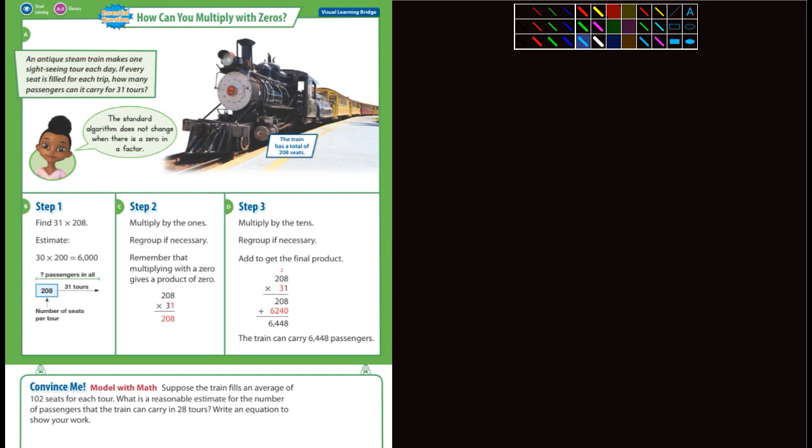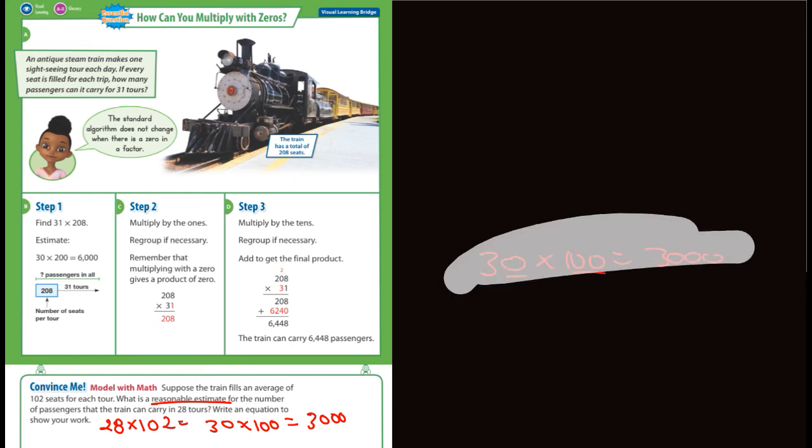But then it says, convince me, model with math. Suppose the train fills an average number of 102 seats for each tour. What's a reasonable estimate for the number of passengers that the train can carry in 28 tours? We're talking about an estimate, a reasonable estimate for 28 times 102. Well, I would just change the 28 to 30, change the 102 to probably 100. Then 30 times 100 equals, well, 3 times 1 is 3, right? How many zeros did we not factor in? So a reasonable estimate would be 3,000. Pretty easy.